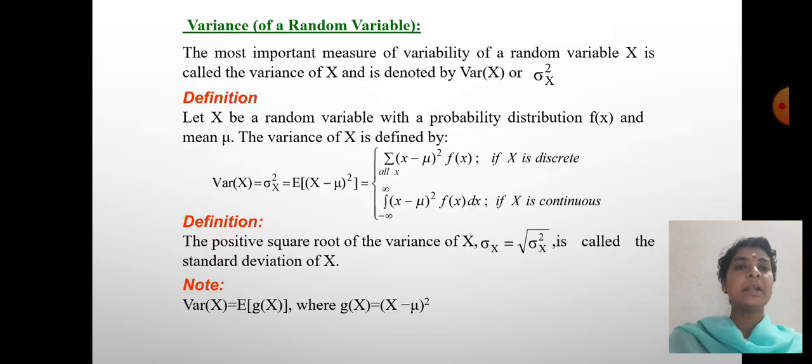Variance of a random variable: The most important measure of variability of a random variable X is called the variance of X and is denoted by Var(X) or σ². Definition: Let X be the random variable with the probability distribution f(x) and mean μ.